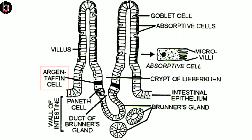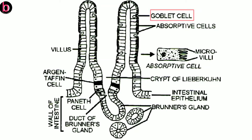Serotonin is also known as 5-HT, that is 5-hydroxytryptamine — this is very important. The third type is goblet cells, which are simple mucus-secreting cells.